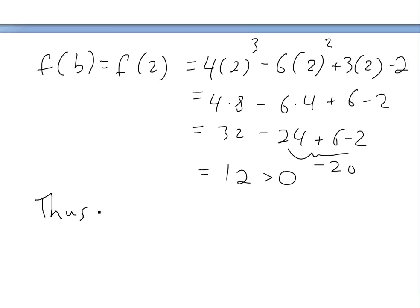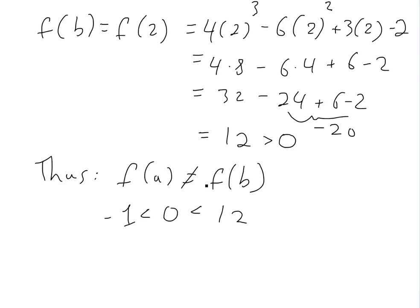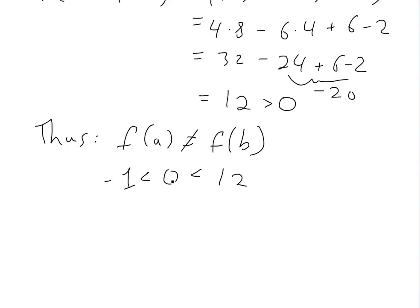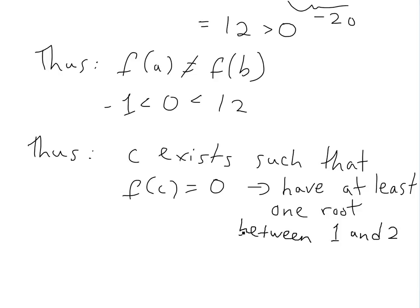Since f(a) is not equal to f(b), and 0 is in between f(1) = −1 and f(2) = 12, by the Intermediate Value Theorem there must exist a c in (1, 2) such that f(c) = 0. In other words, we have a root. We have at least one root — the theorem doesn't say how many, just that at least one root exists between x = 1 and x = 2.